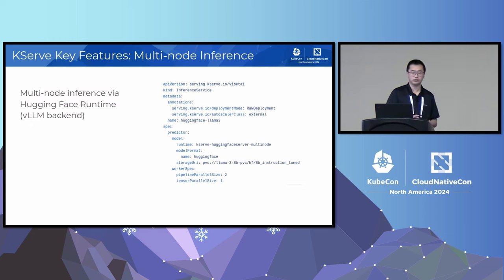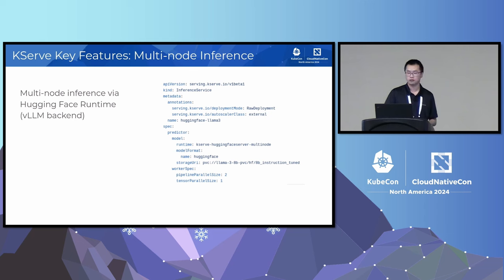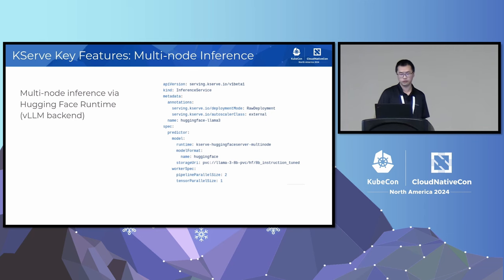Another recently added feature is support for multi-node inference. This PR just got merged last week, so it's not in any release yet — but feel free to try it out and provide feedback to the community. Right now, multi-node inference is supported as part of the Hugging Face runtime using the vLLM backend. You can specify the pipeline parallel size and tensor parallel size under the worker spec according to how large your model is.